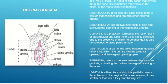The external genitalia is the part of the female reproductive system that can be seen externally. This can also be called the vulva. It consists of the mons pubis, the labia majora, the clitoris, labia minora, vaginal opening, hymen, perineum, and urethral opening. Let's have a brief look at each of these.